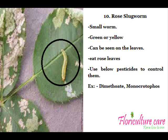Rose Slug Worm is a small worm, green or yellow in color, that can be seen on leaves. They eat rose leaves, leaving only the veins remaining. The destroyed parts appear brown in color. Use Dimethyloid and Monocrotophos pesticides to control them.